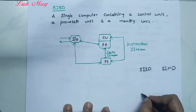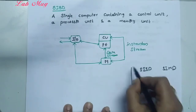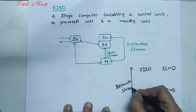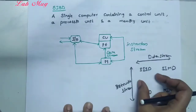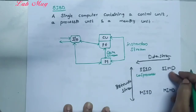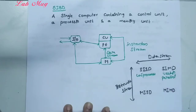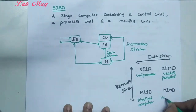Single Instruction Multiple Data, Multiple Instruction Single Data, and Multiple Instruction Multiple Data. For SISD, there are uniprocessors. Generally, SISD corresponds to uniprocessors. For SIMD, there are vector processors and parallel processors. For MISD, there are pipeline computers.